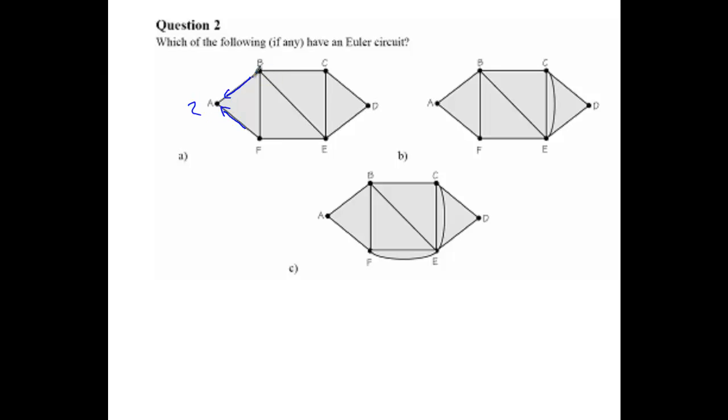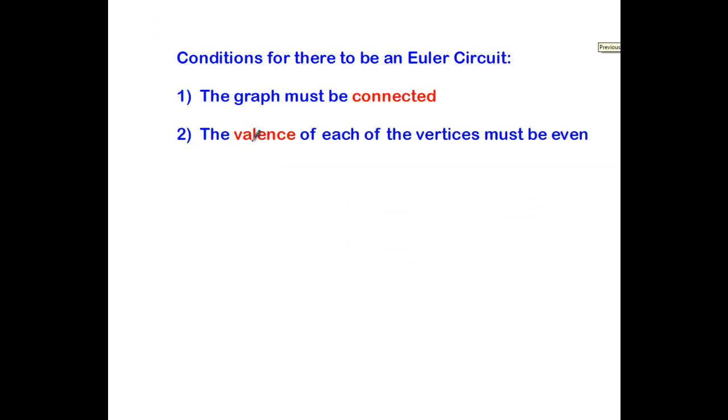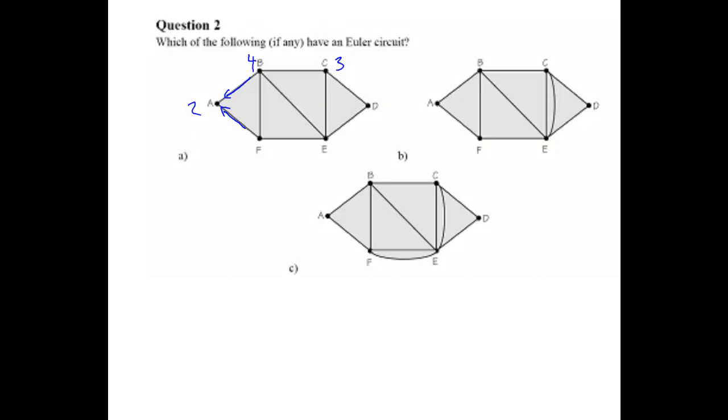B has 4, 1, 2, 3, 4. C has 1, 2, 3. Once I get one odd valence, that means that it doesn't satisfy condition 2. The valence of each of the vertices must be even, and so this does not have an Euler circuit.